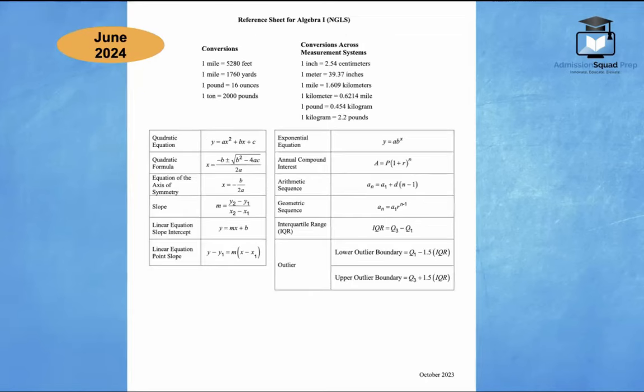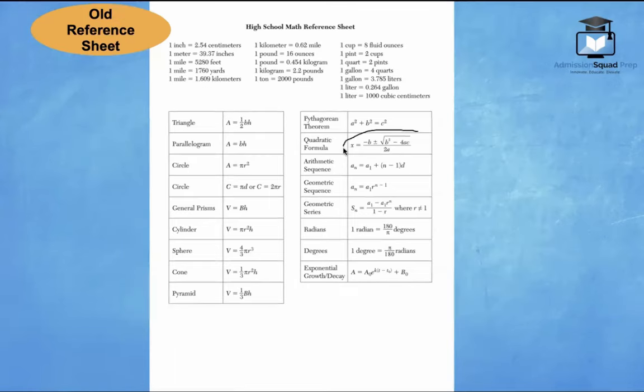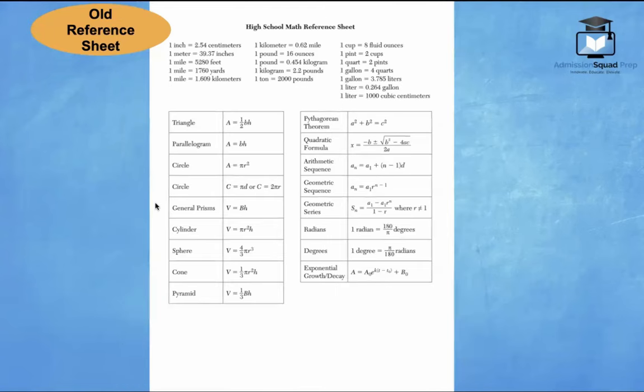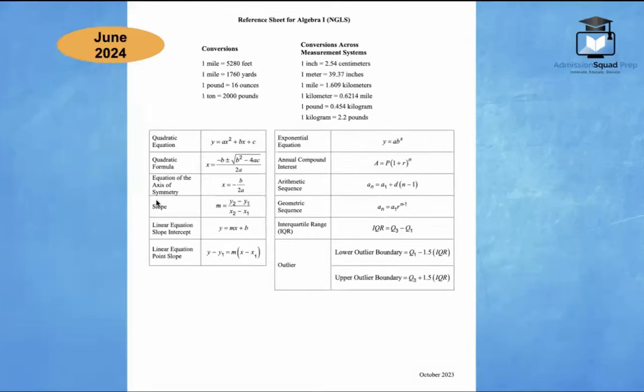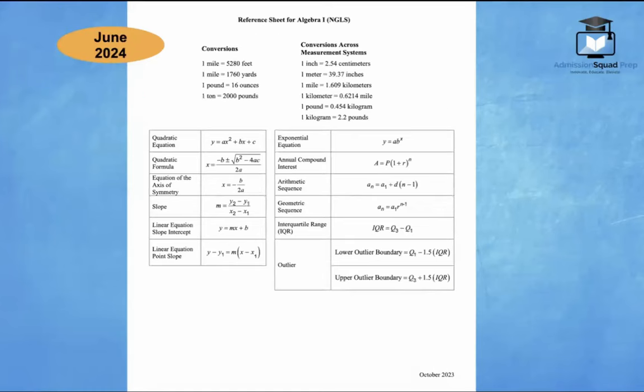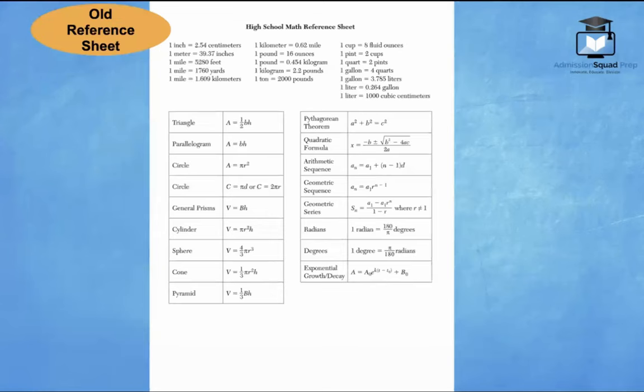We also have the quadratic formula. So that's going to be on the new reference sheet. It was also on the old reference sheet right over here. The new reference sheet is going to provide the equation of the axis of symmetry. That information was also not included on the old reference sheet. We also have the slope formula that's included. M equals y2 minus y1 over x2 minus x1. There was no slope formula on the old reference sheet. We also have the linear equation slope intercept form y equals mx plus b. That was not on the old reference sheet.